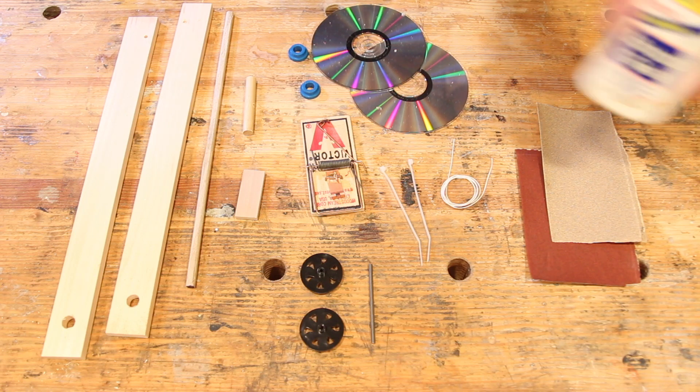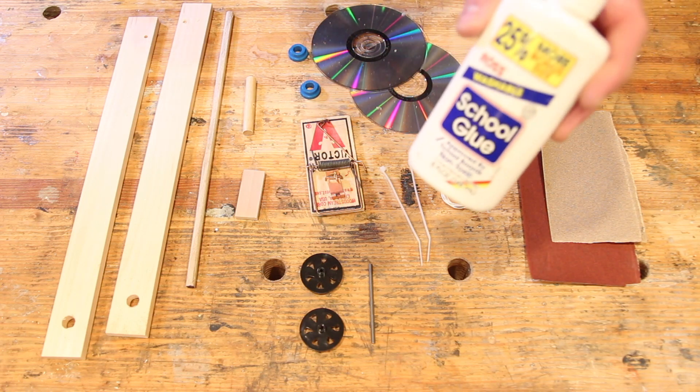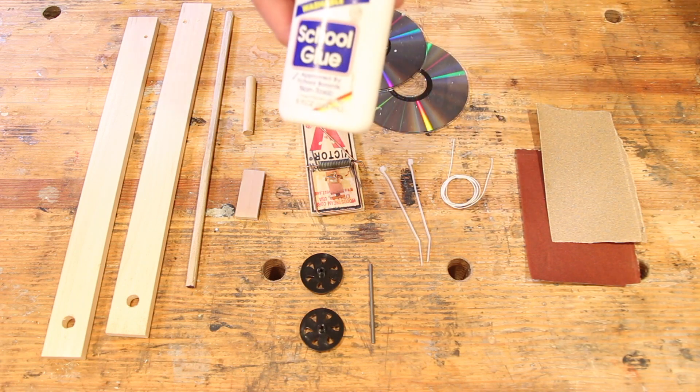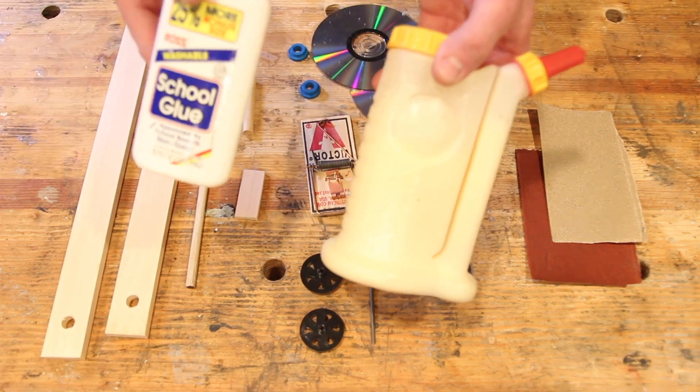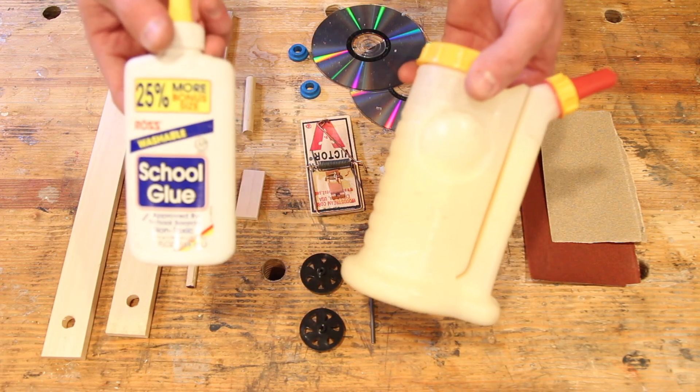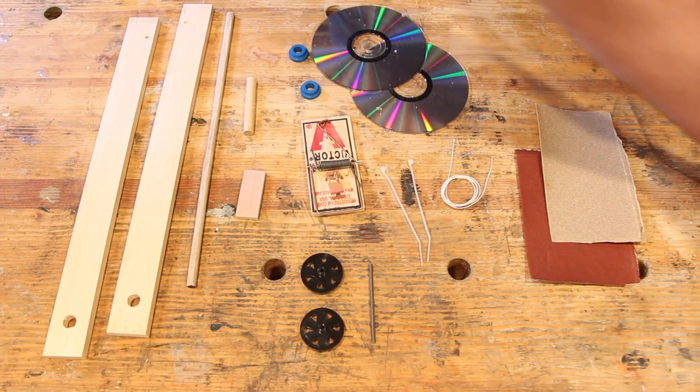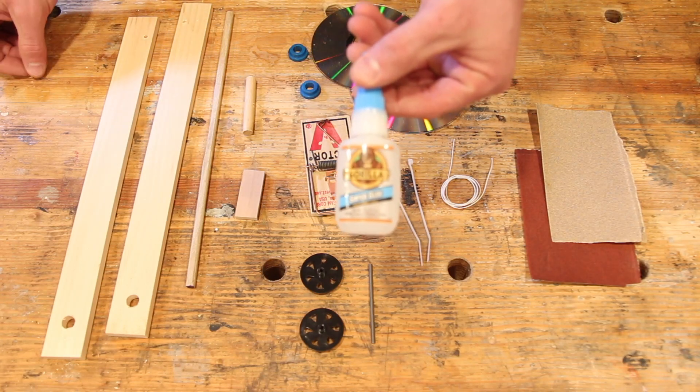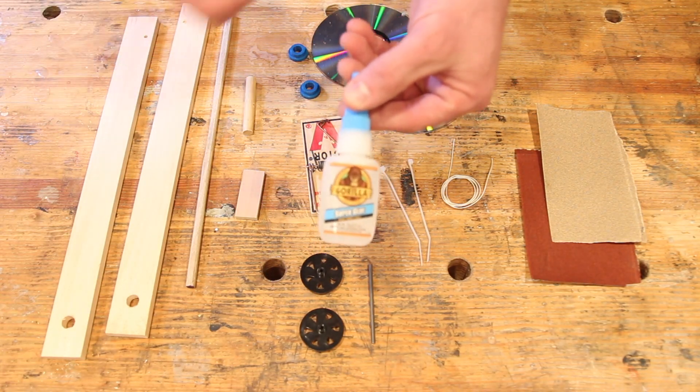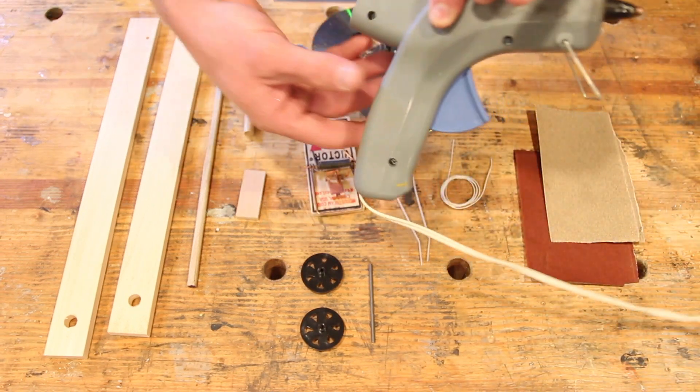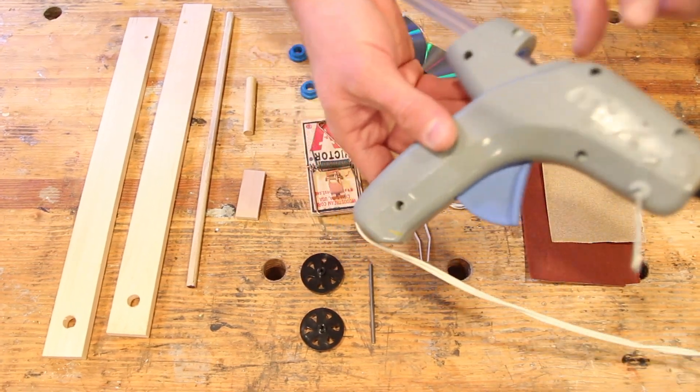Now you're going to need some glue as well. You can use just regular school glue, Elmer's glue if you've got that, or wood glue also works. These two just take longer to dry but they work well. You could also use super glue on it. Dries faster, and the one that dries the fastest would be hot glue. That's what I'm going to be using right now.